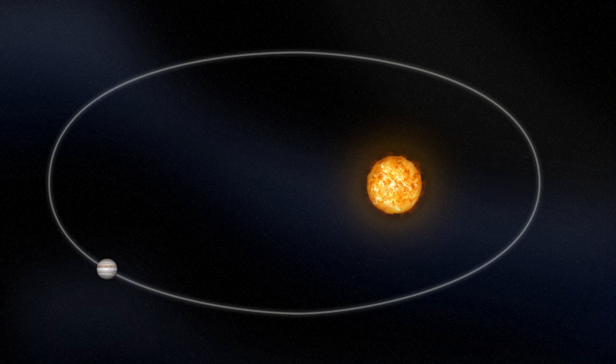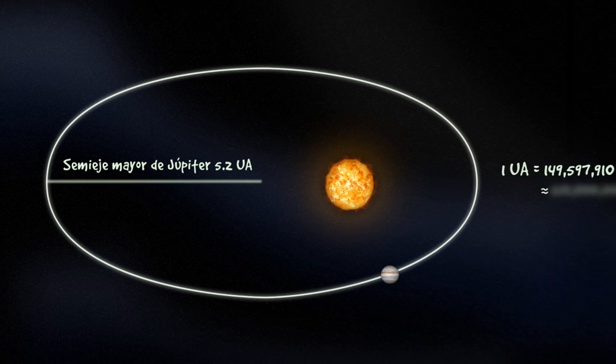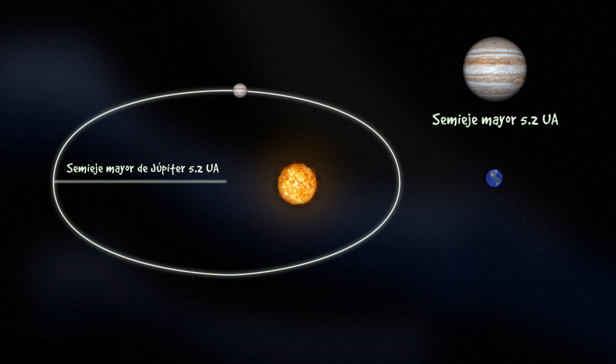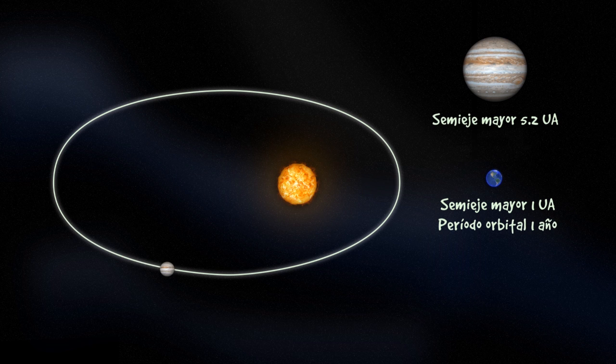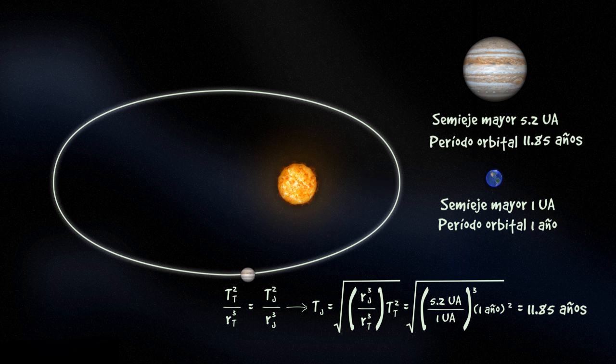El semieje mayor de la órbita de Júpiter mide 5.2 unidades astronómicas. Si tomamos para la órbita de la Tierra como semieje mayor una unidad astronómica y sabiendo que su periodo orbital es de un año, podemos averiguar el periodo orbital de Júpiter, ya que los periodos orbitales y los semiejes mayores de los planetas están relacionados. Entonces, podemos concluir que Júpiter le da la vuelta al Sol en 11.85 años.